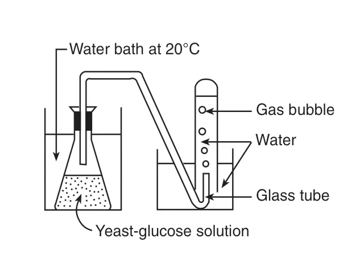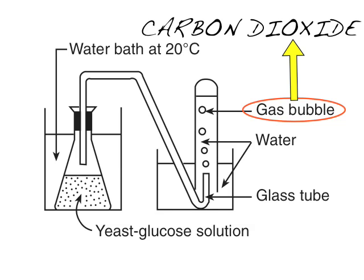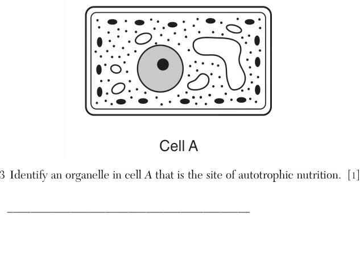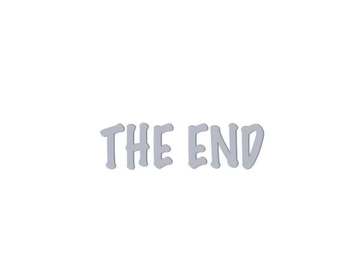Yeast is a heterotroph — in this experiment it makes bubbles in the water. What are those bubbles? If you said carbon dioxide, correct. And give an organelle in the cell that is the site of autotrophic nutrition — the answer is chloroplast. That's our quick review of photosynthesis and cellular respiration — see ya!